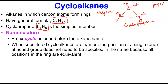Now let's go into nomenclature. For cycloalkanes that do not have any attachment, we simply put 'cyclo' before the name of the alkane. So propane becomes cyclopropane, butane becomes cyclobutane, hexane becomes cyclohexane, pentane becomes cyclopentane. The prefix 'cyclo' is placed before the alkane name.